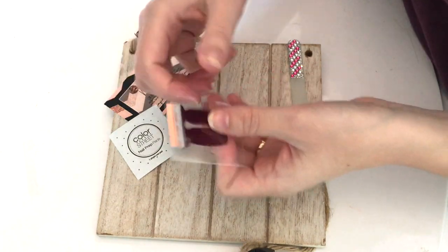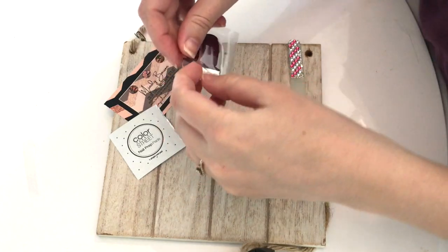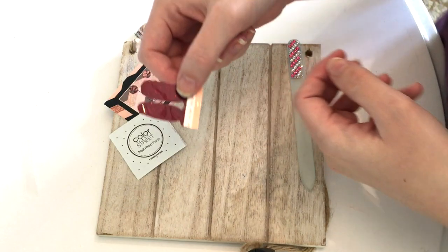First, you just rip off the top or you can cut it off along the edge and take out the two nail strips.